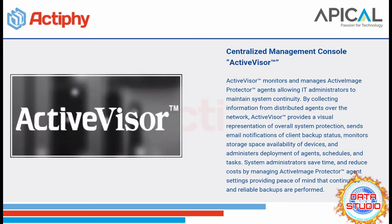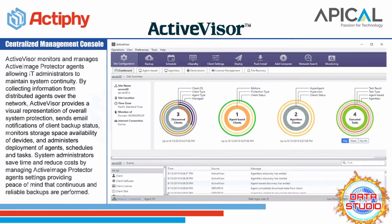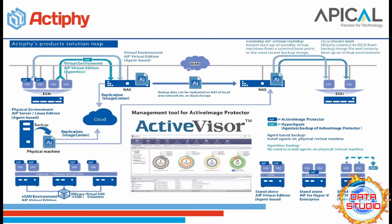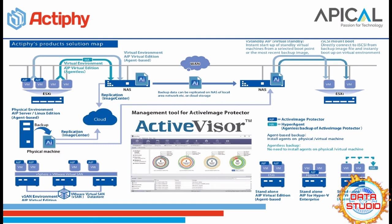Centralized management console — Activizer monitors and manages Active Image Protector agents, allowing IT administrators to maintain system continuity by collecting information from distributed agents over the network. Activizer provides a visual representation of overall system protection, sends email notifications of client backup status, monitors storage space availability, and administers deployment of agents, schedules, and tasks. System administrators save time and reduce costs by managing agent settings, with peace of mind that continuous and reliable backups are performed.